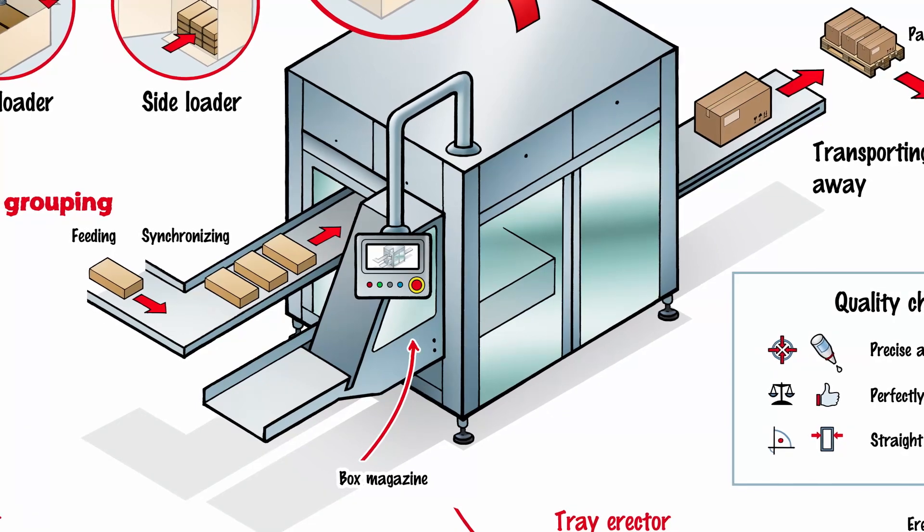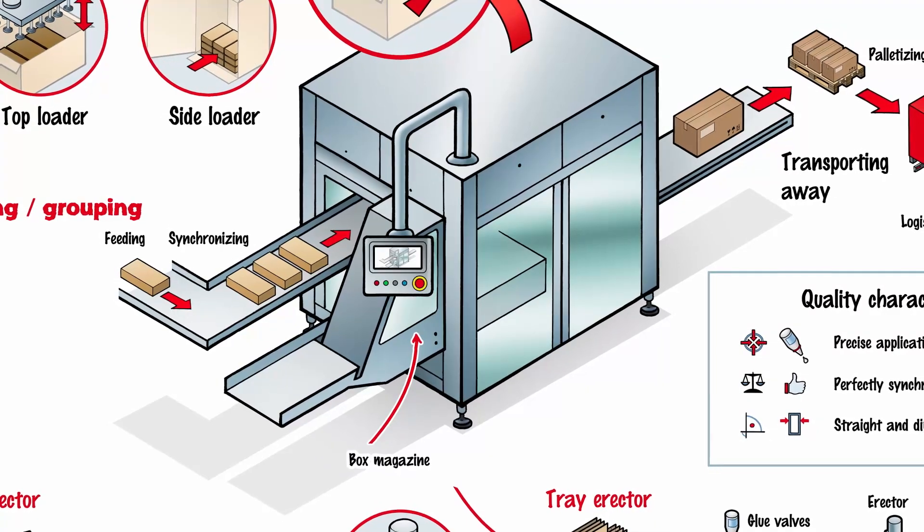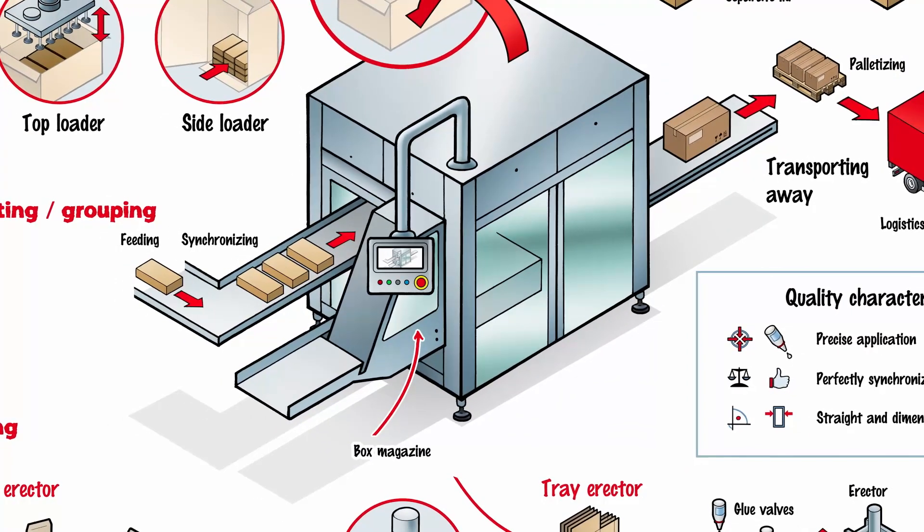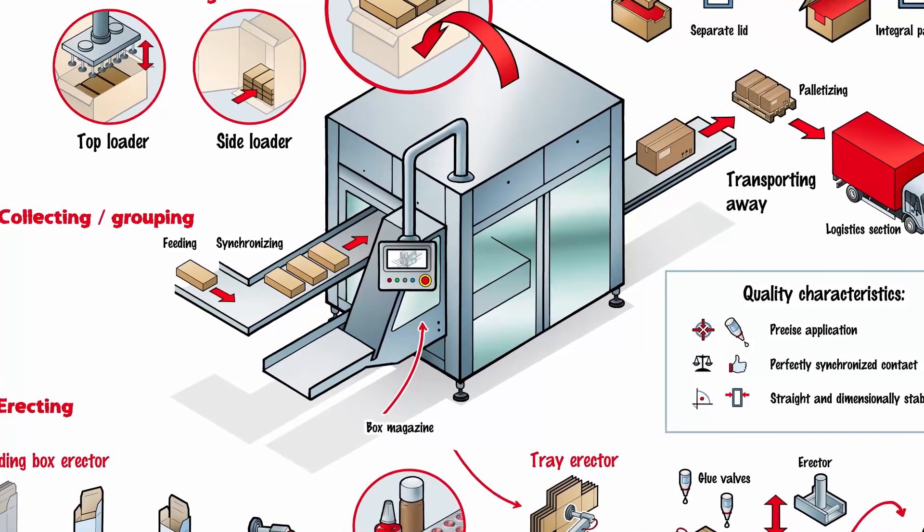The main steps of erecting, packing, and closing the box are often split into separate machine modules. This ensures excellent flexibility when it comes to handling different box shapes and packaging materials.